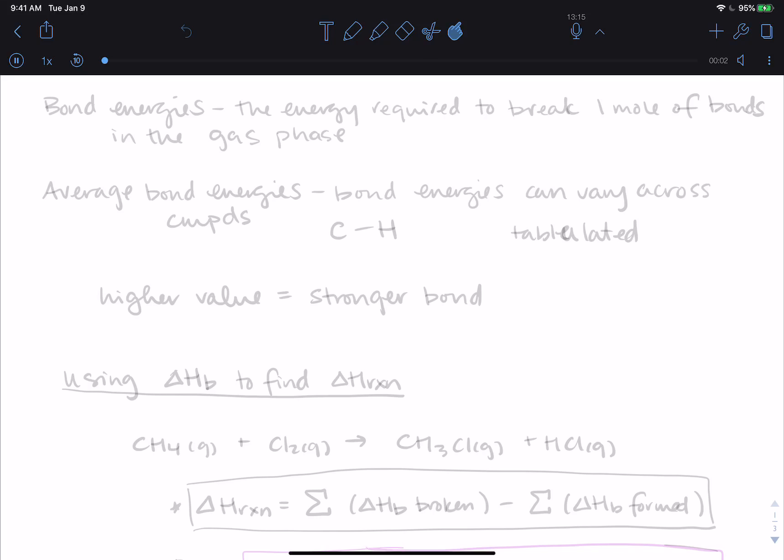One last type of enthalpy value that we will look at in this chapter is related to looking specifically at the energy held in bonds. So we're going to talk about bond energies. And this is the energy required to break one mole of the bonds in the gas phase.